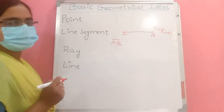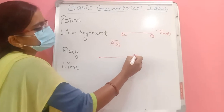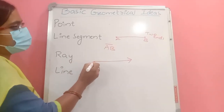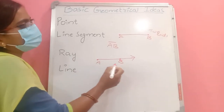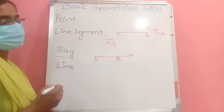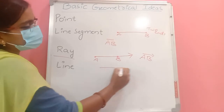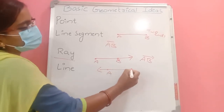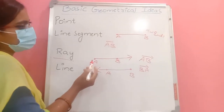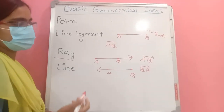A ray is a line segment that has one end and another side that is endless — it is continuous. This we call a ray. A ray is denoted as AB with an arrow. If the arrow is on the B side, then we denote it as ray BA, not ray AB, because B side is prolonging.